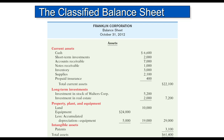Notice the current assets are listed in a certain order: cash, short-term investments, accounts receivable, notes receivable, inventory, supplies, and prepaid insurance. They are referred to as current assets because they're going to be used up within the next accounting period, and they are listed in the order of liquidity. The liquidity of an asset is about how quickly that asset can be turned back into cash. Cash, of course, is the most liquid. Short-term investments can be cashed in right away, accounts receivable will be collected in 30 days, and so on.